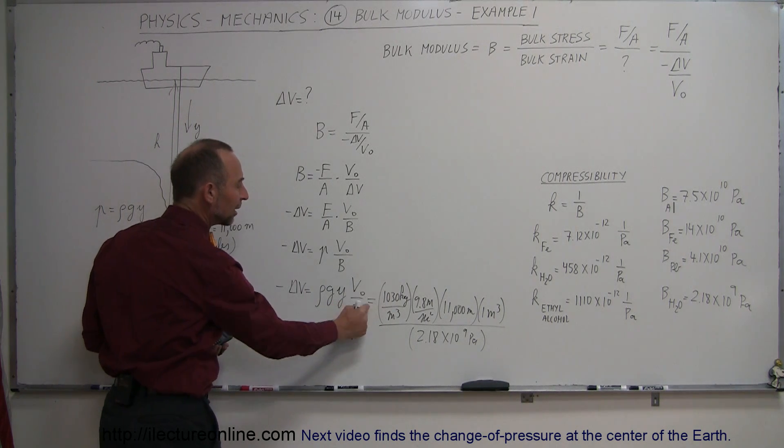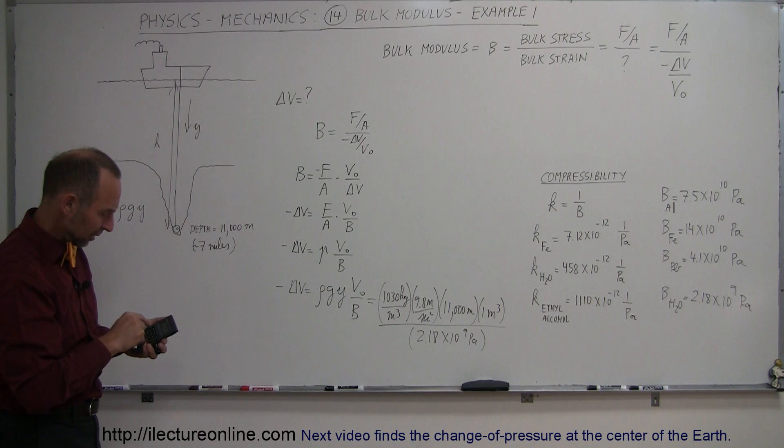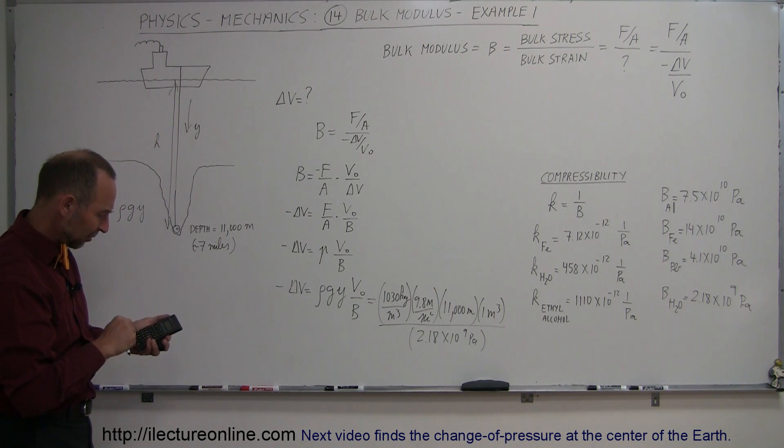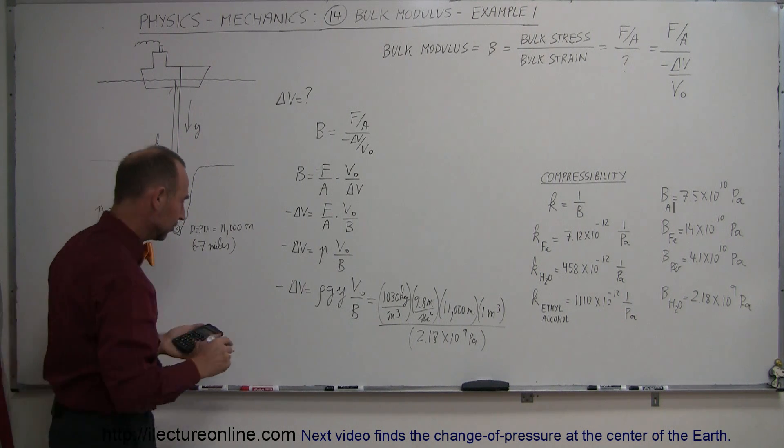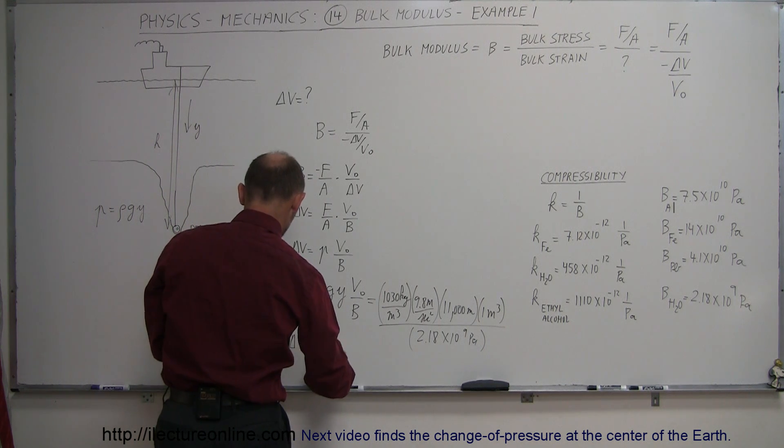Notice that if I had left it in terms of compressibility, I would simply say the change in volume is this times the compressibility instead of divided by the bulk modulus, but I just want to do it like this. So, now take the inverse again. So, we get back to the compressibility.